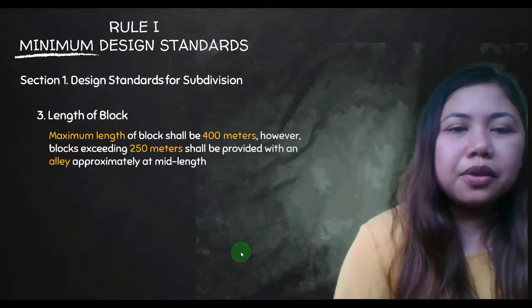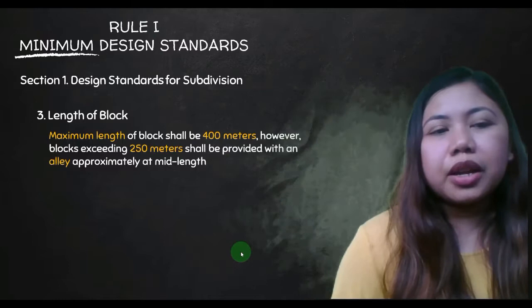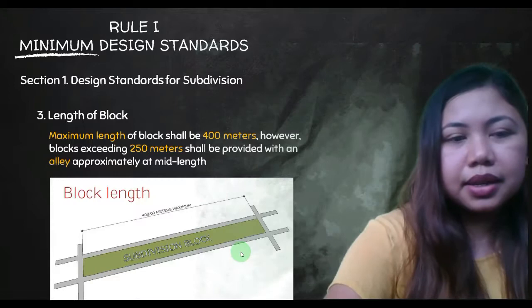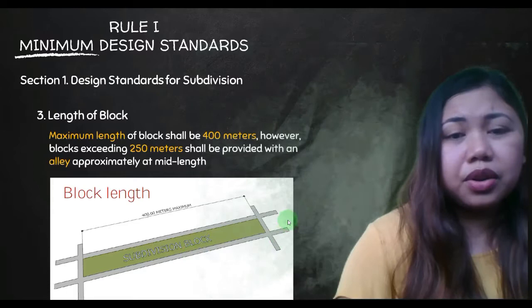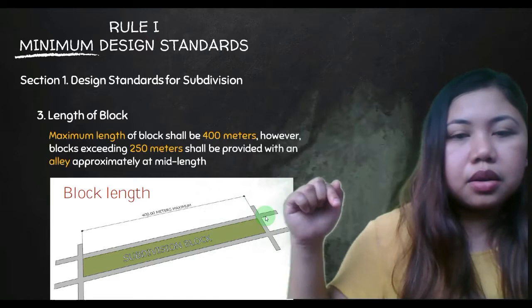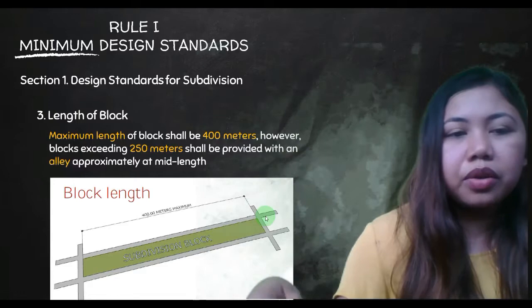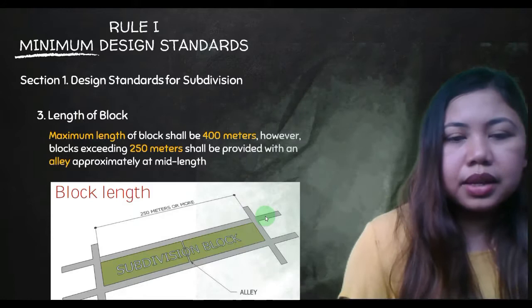Length of the block: maximum length shall be 400 meters. However, blocks exceeding 200 meters shall be provided with an alley approximately at mid-length. So the maximum block length is 400 meters, and if it exceeds 200 meters, an alley must be provided in the middle.